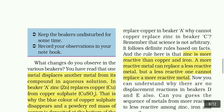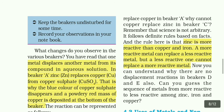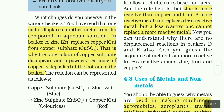What changes do you observe in the various beakers? You have read that one metal displaces another metal from its compound in solution. In beaker A, zinc replaces copper from copper sulphate. That is why the blue colour of the copper sulphate disappears and a powdery red mass of copper is deposited at the bottom of the beaker.